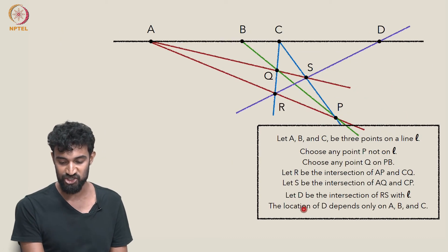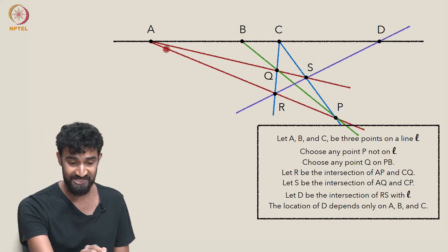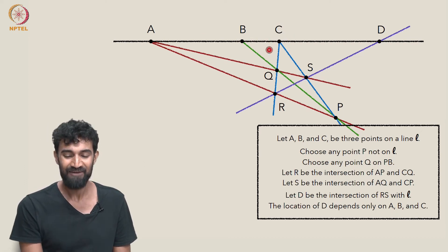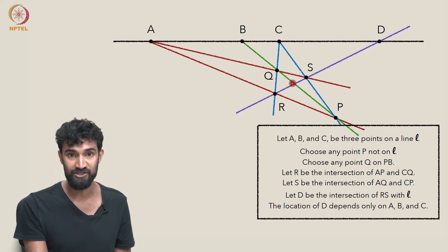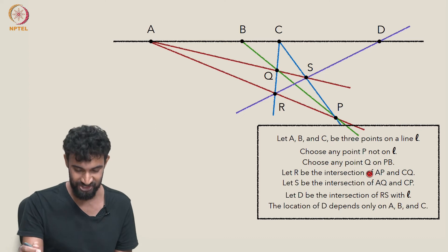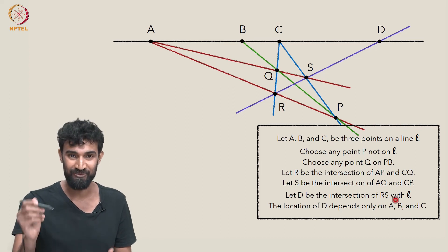So in every situation, the location of D seems to depend, does indeed seem to depend only on A, B, and C. Of course, I've only given three examples. You can try it yourself and try other places of putting P and Q. And I encourage you to try it once just to see it in action from your own pencil.